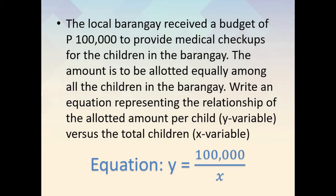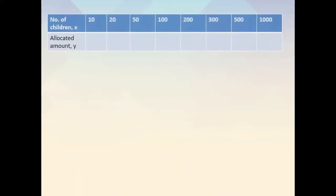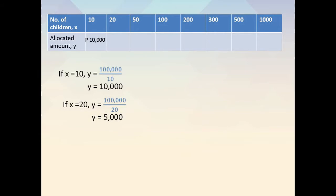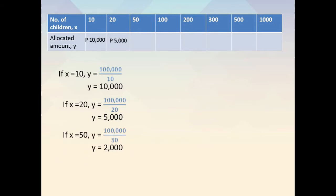If x is equal to 10, then y is equal to 100,000 over 10, so y is equal to 10,000 pesos. If x is equal to 20, then y is equal to 100,000 over 20, so y is equal to 5,000 pesos. If x is equal to 50, then y is equal to 100,000 over 50, so y is equal to 2,000 pesos.